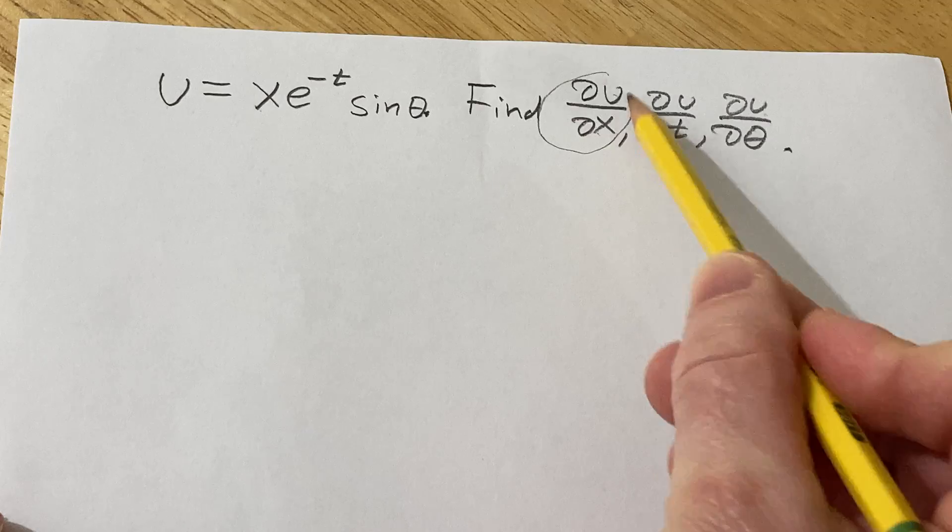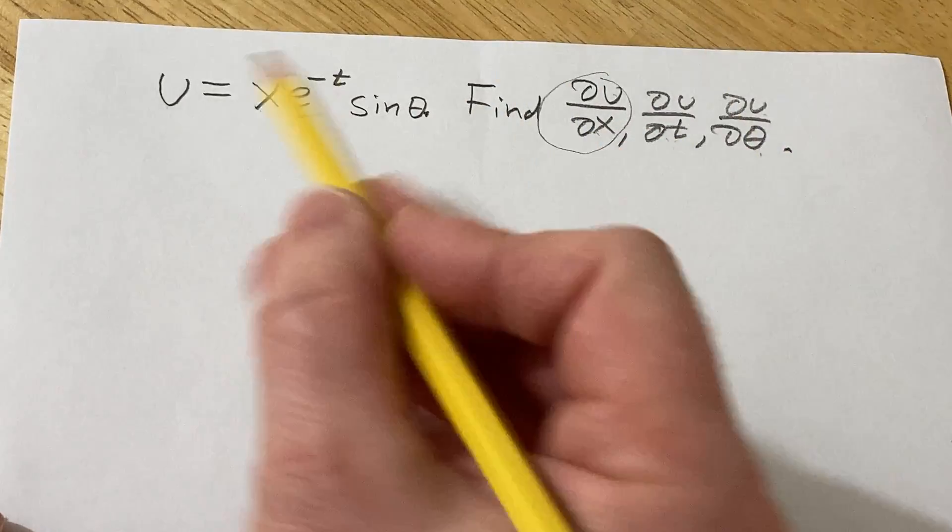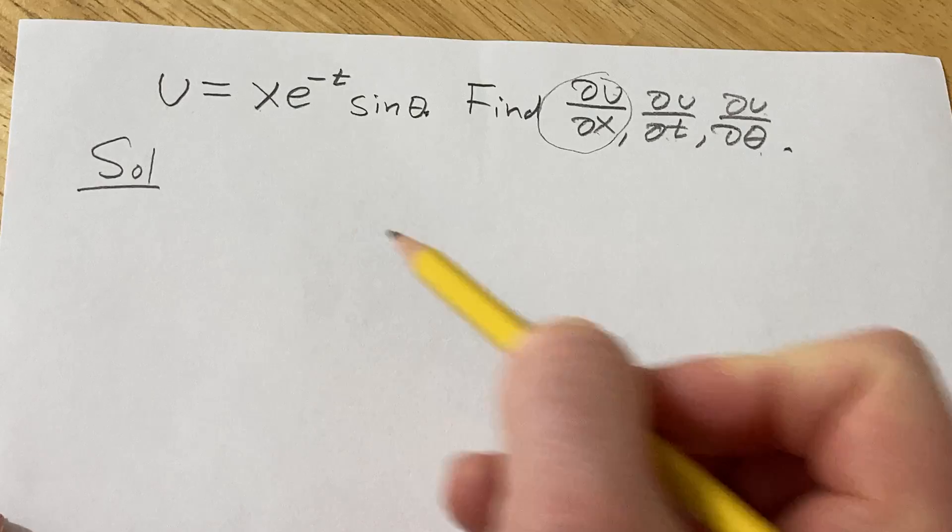So for example, when we find ∂u/∂x, we want to treat everything else with t's and thetas as constants. Let's go ahead and work through it. Solution.